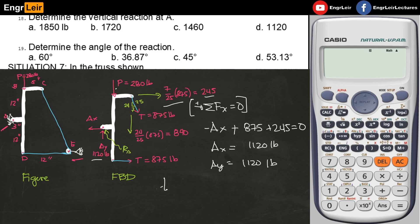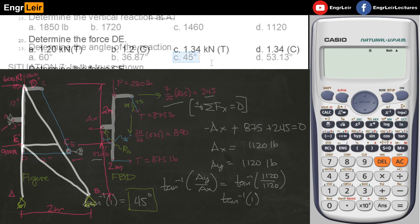To get the angle, you just take the arctangent of A Y over A X. This gives 45 degrees. So the angle is 45 degrees, and that angle refers to this angle here. This is the 45 degrees. So our answer for number 19, the last question for situation 6, is 45 degrees or letter C.